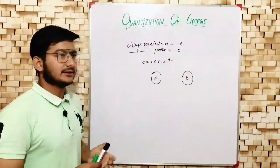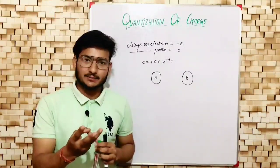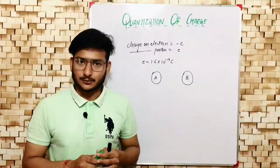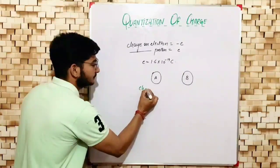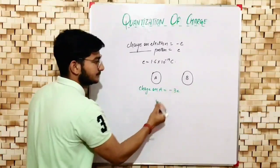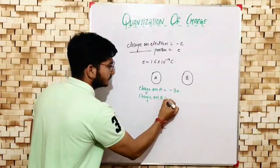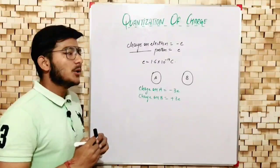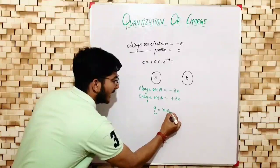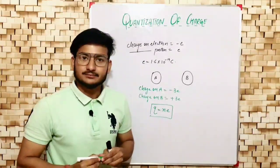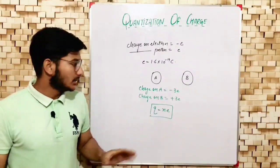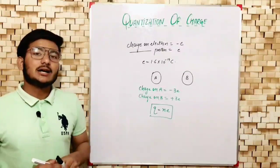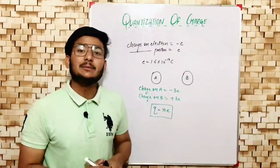If 3 electrons are transferred from B to A, then A gains 3 electrons and B loses 3 electrons. In B, the number of protons now exceeds electrons by 3. So the charge on A becomes −3e and the charge on B becomes +3e. In general, the charge on any body can be written as Q = Ne, where N is any integer — positive if the charge is positive, negative if the charge is negative. This is known as the quantization condition: charge on any body is an integral multiple of the elemental charge.